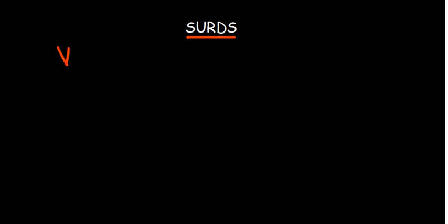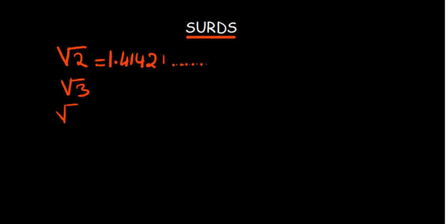In this video we are going to look at surds. Surds are just numbers that cannot be expressed exactly as a decimal fraction because they give never-ending or non-repeating decimal fractions. For example, the square root of 2 is a surd — you get 1.414 and the decimal places just keep going and going. Even though we can't express these numbers exactly as a decimal fraction, there are rules that can help us manipulate them.